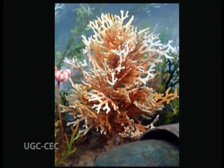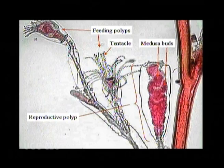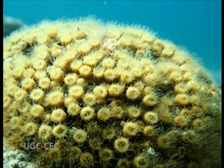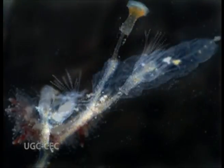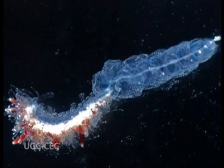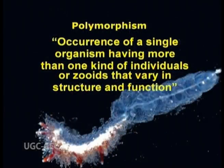Now that we have a general idea about Coelenterates, let us understand the phenomenon of polymorphism and the various types of polypoid and medusoid forms observed in the cnidarians. Coelenterates are known for their polymorphism and there are many forms like polyps and medusae that occur in a variety of forms. In many Coelenterates these forms are reducible to one form, that is either a polyp or a medusa. However, in the members of class Hydrozoa, polymorphism is prominent and all the forms performing various functions are found together in the form of a colony. Hence polymorphism can be defined as the occurrence of a single organism having more than one kind of individuals or zooids that vary in structure and function.